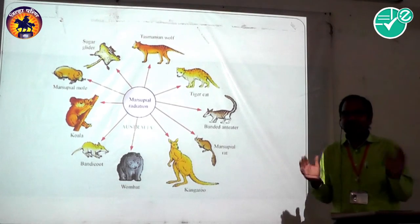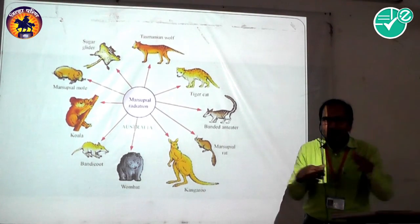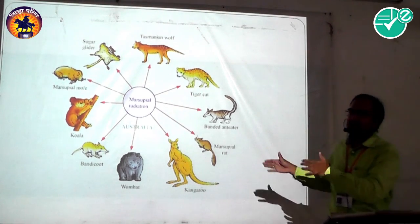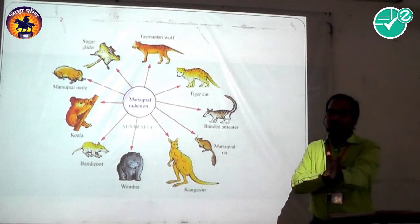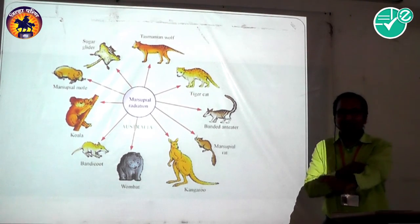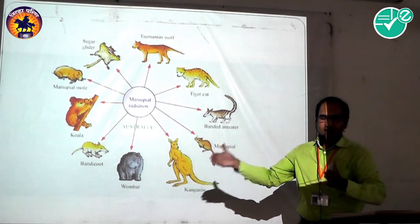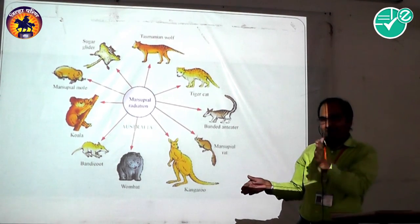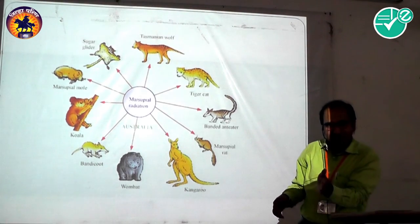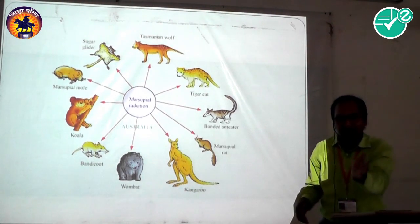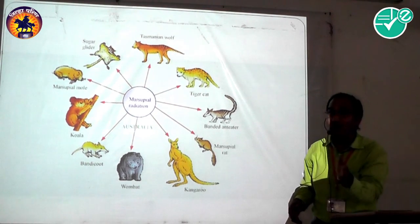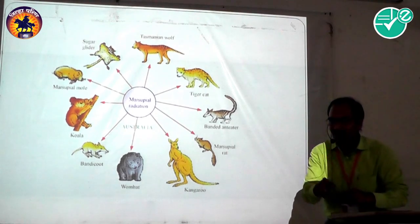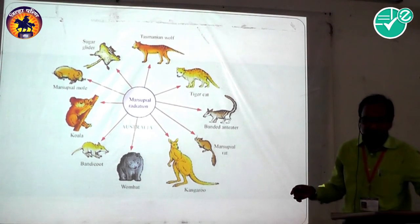Geographical conditions are mainly responsible for speciation. Such speciation is called allopatric speciation. Remember: allopatric speciation means speciation on another land, caused by geographical barriers leading to isolation. There are two examples: the first is Darwin's finches and the second is the Australian marsupials.